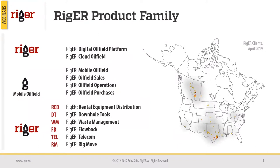The Rieger family is growing both in terms of applications and geographic span. As a platform, Rieger has a cloud system backed by a cloud-based database fully supported by mobile applications. The mobile suite now includes four different apps: Mobile Oil Field, Oil Field Sales, Oil Field Operations, and Oil Field Purchases. We have also built applications on the platform for different business types, including rental equipment distribution, down-hole tools, waste management, flow back, telecom, and rig moves.